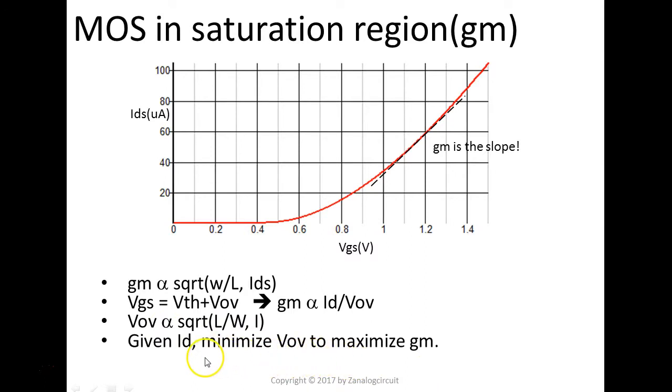Now, and also, you can find out that, given the same amount of ID, in order to maximize GM, a lot of times, you need to maximize GM to improve the offset. So, how to maximize the GM? With the same ID. One way to do it is to minimize the V overdrive. How to minimize the V overdrive? To increase the W over L ratio.